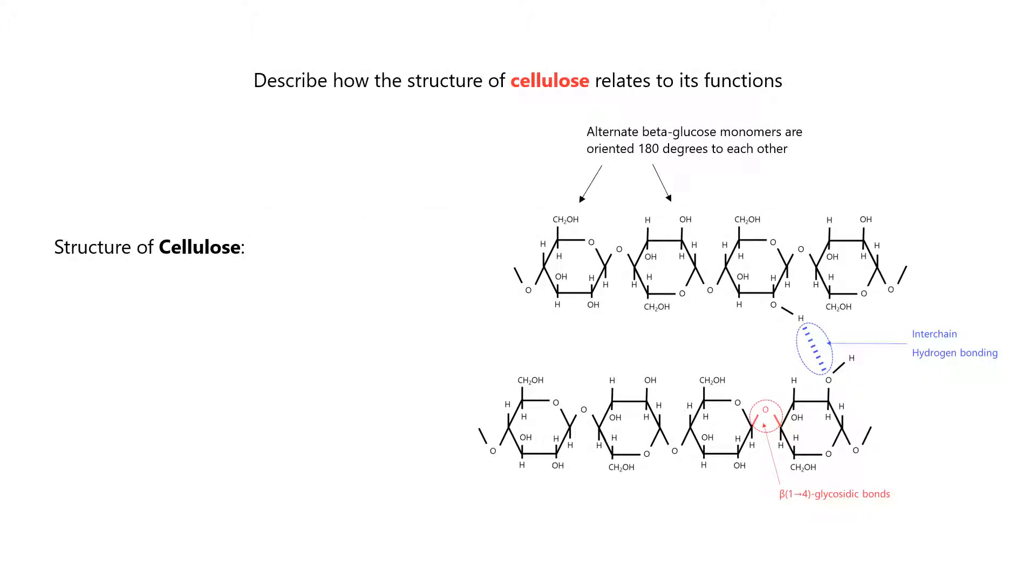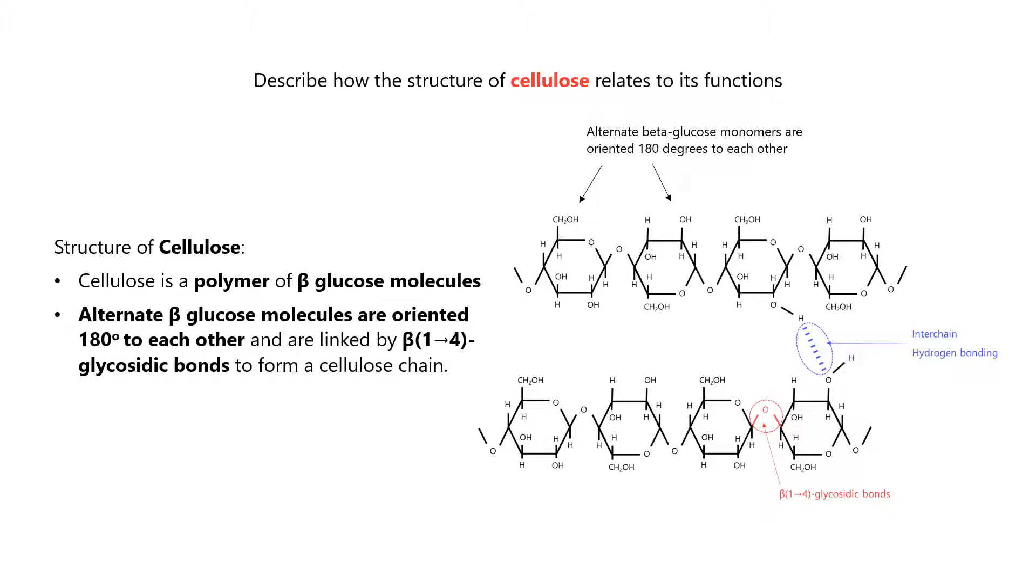First, let's describe the structure of cellulose. Cellulose is a polymer of beta-glucose molecules. Alternate beta-glucose monomers are oriented 180 degrees to each other and are linked by beta-1,4 glycosidic bonds to form a cellulose chain.